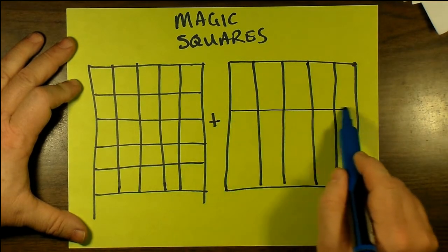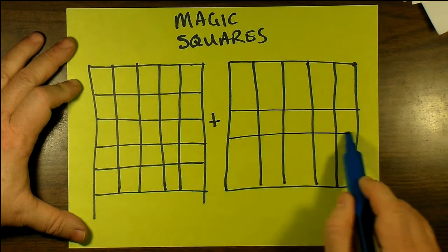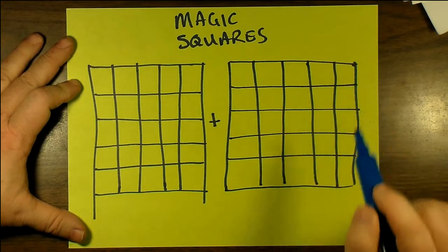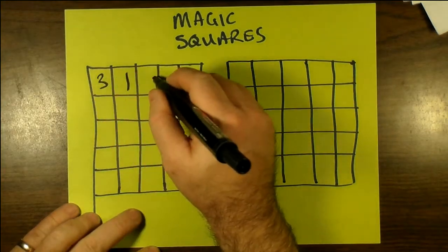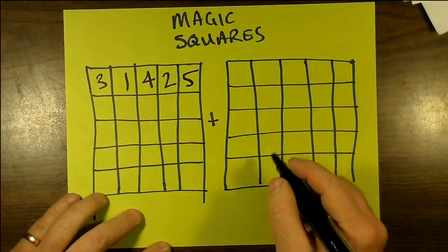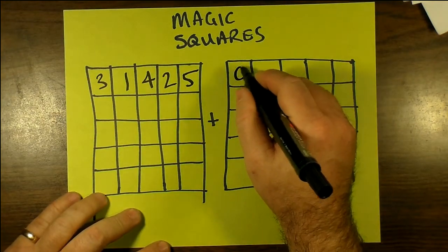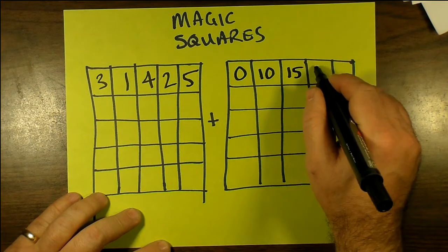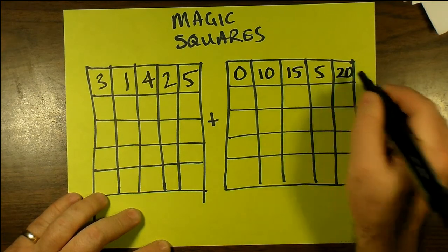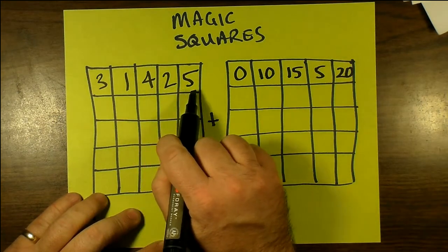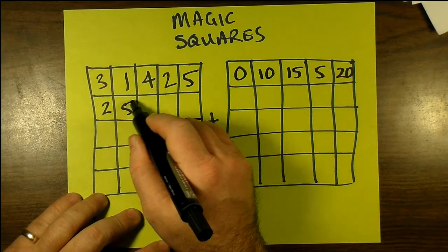Let's just set this up. So we got our 5x5 and I'm going to lay out the numbers from 1 to 5 in some kind of random order. The order actually does not matter at all.